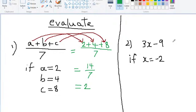For the second question, we have 3 multiplied by x subtract 9, and we are told that x is equal to negative 2. So we are going to substitute for x and use brackets to be safe. So x is negative 2, put in a little bracket, subtract 9.